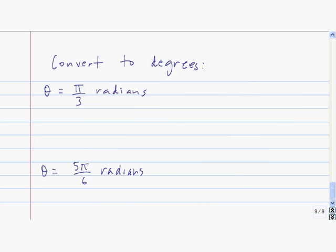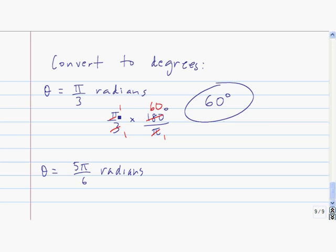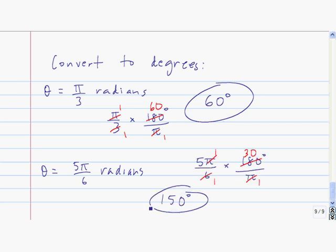Here are a couple more to try. For the first one, pi over 3 times 180 over pi: the pi's cancel and 3 goes into 180 sixty times, giving 60 degrees. For the next one, 5 pi over 6 times 180 over pi: the pi's cancel and 6 goes into 180 thirty times, so 5 times 30 gives us 150 degrees.